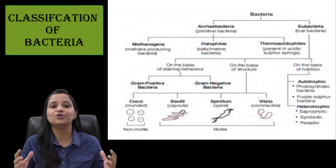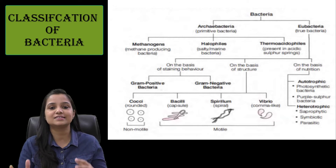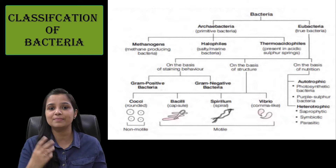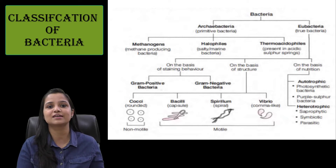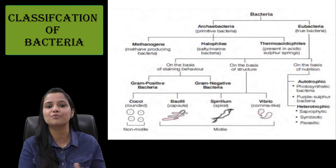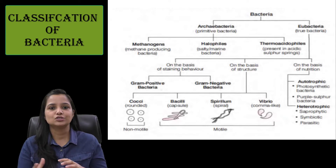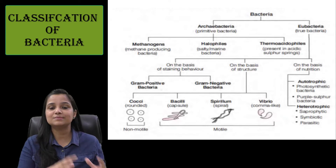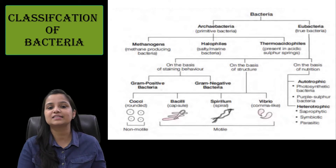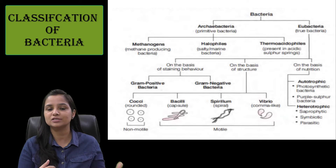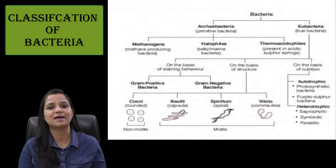Eubacteria is divided on three bases. The first one is on the basis of their staining properties. On this basis, it is divided into two types: gram-positive bacteria and gram-negative bacteria.